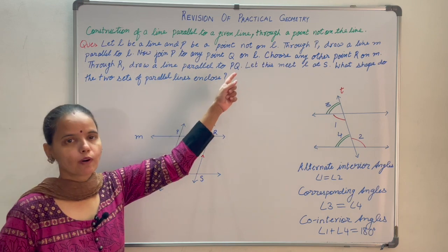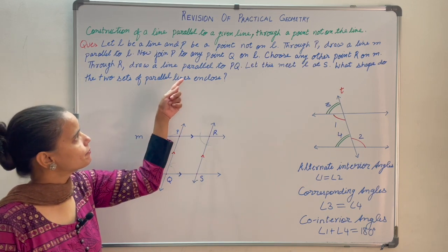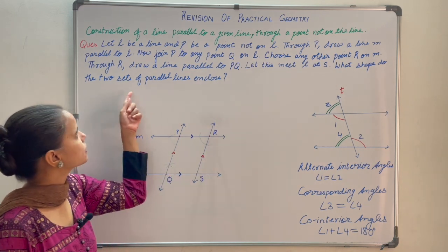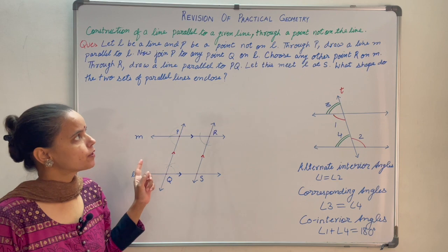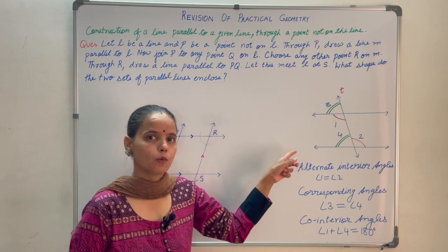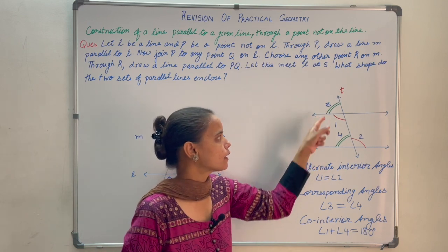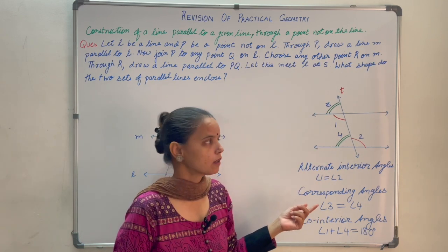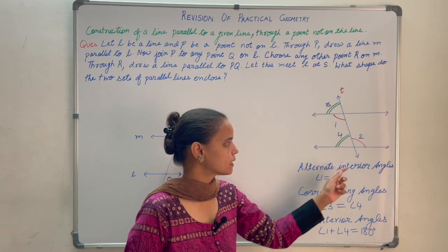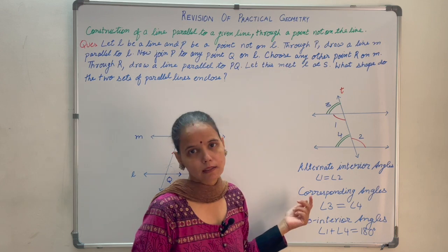Now join P to any point Q on L. Choose any other point R on M. Through R draw a line parallel to PQ, and let it meet L at X. What shape do the two sets of parallel lines enclose? Before we solve this, let us do a quick recap. Two lines are parallel when one pair of alternate interior angles are equal, or one pair of corresponding angles are equal, or the sum of co-interior angles is 180 degrees. We will use alternate interior angles equal to draw one set of parallel lines and corresponding angles equal to draw another.